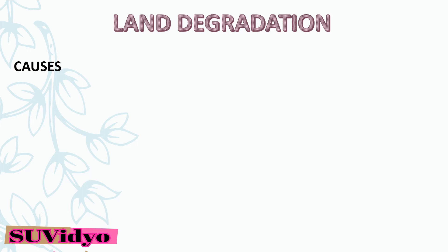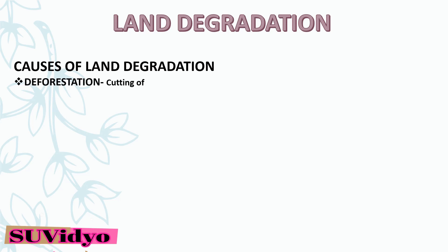One of the most important topics of the chapter is land degradation. The causes of land degradation are deforestation, overgrazing, over-irrigation, industries, mining and quarrying, and industrial effluents.